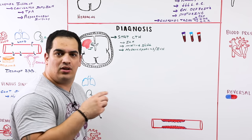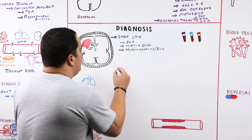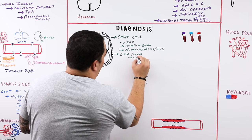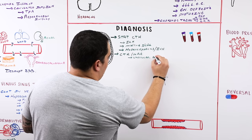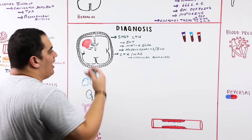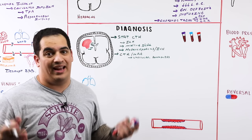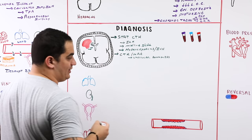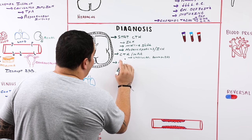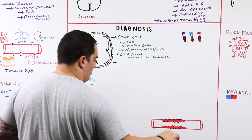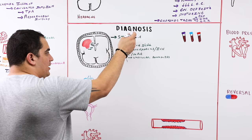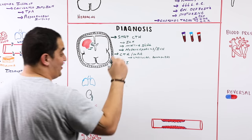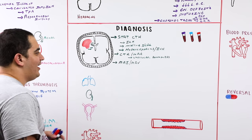An MRI is valuable after initial stabilization. The SWI (susceptibility-weighted imaging) sequence is particularly important — it shows iron or blood deposits as dark spots, identifying hemorrhages. An MRV (MR venography) is used to look for cerebral venous sinus thrombosis by filling contrast through cerebral veins.